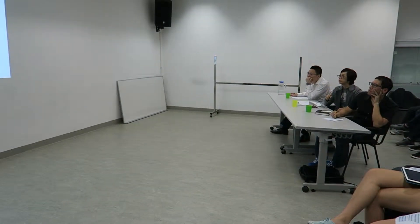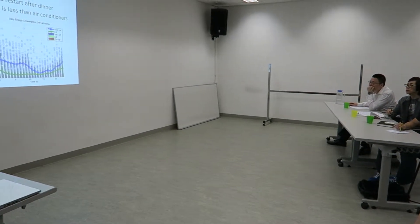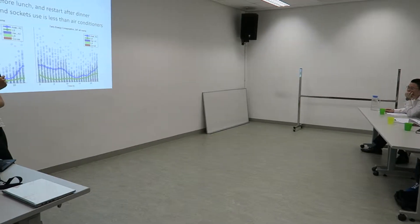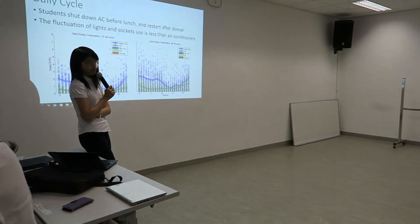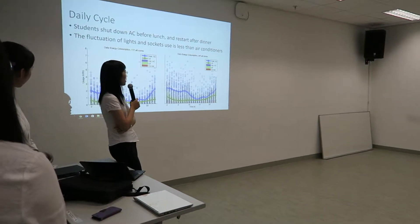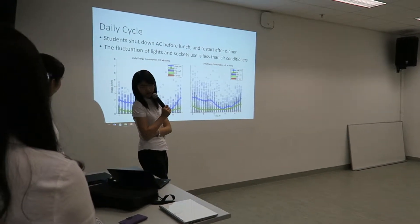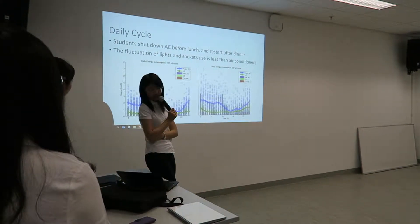Here is the daily cycle. The blue line represents air conditioner electricity use and the green line represents light and socket usage. We can draw two conclusions: first, students may shut down the air conditioner in the morning when they go to school and restart it after they return. Second, the fluctuation of the light and socket usage is generally less than that of the air conditioner.